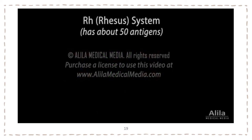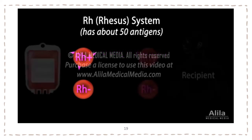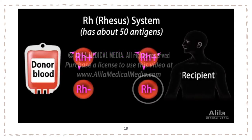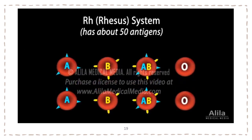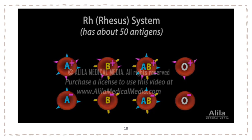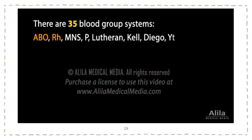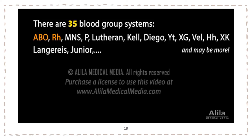Another important system is the RH system, for which D antigen or RH factor is best known. Blood type for this antigen is either RH positive or RH negative. An RH negative patient cannot receive blood from an RH positive donor, while the reverse is fine. Each of the four ABO types can be RH positive or negative, giving eight possible combinations — the eight basic blood types. But ABO and RH are only a fraction of the 35 currently known blood group systems, many of which can cause serious reactions during transfusion if mismatched.